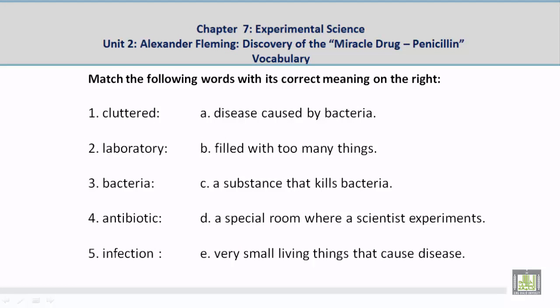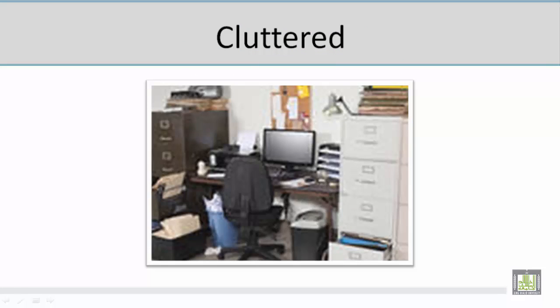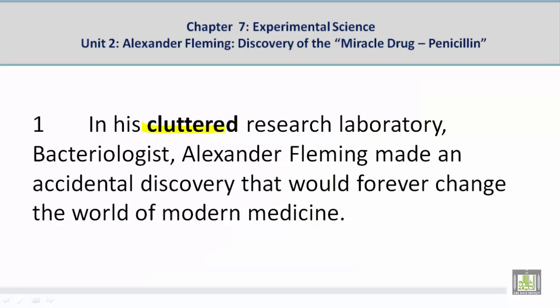Match the following words with its correct meaning. Number 1: Cluttered. The correct meaning is B — filled with too many things. Now let's take a look at a picture related to the vocabulary word "cluttered." In his cluttered research laboratory, bacteriologist Alexander Fleming made an accidental discovery that would forever change the world of modern medicine.